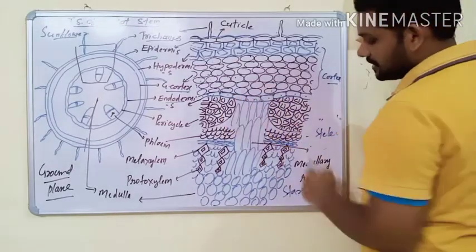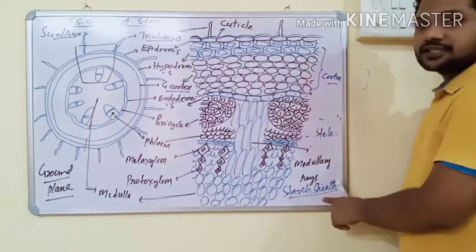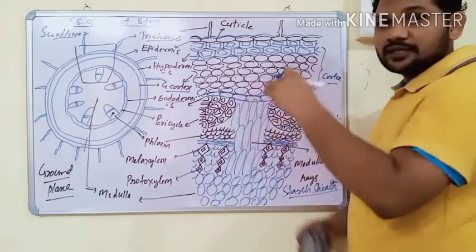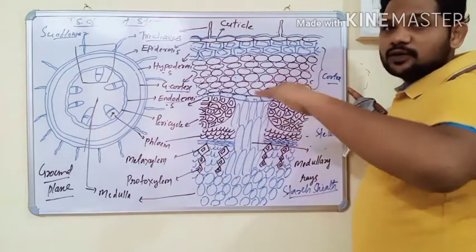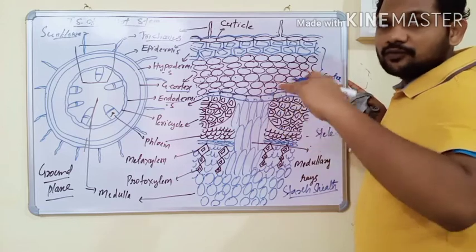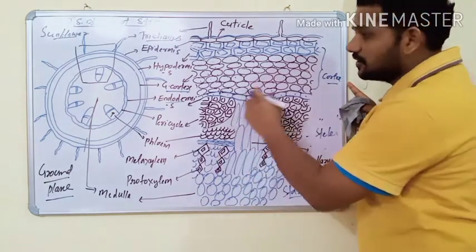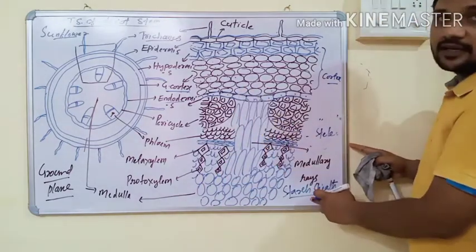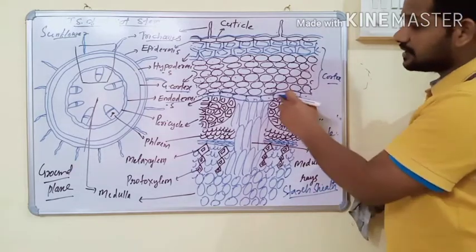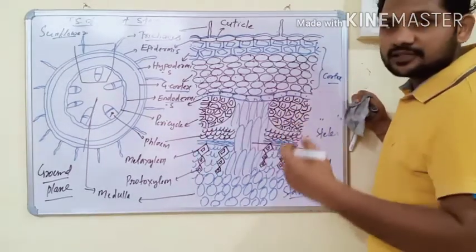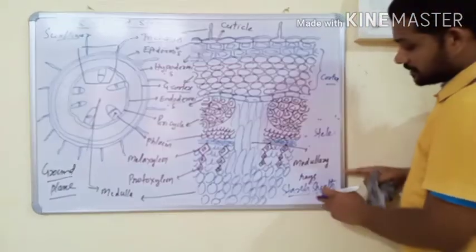The endodermis is rich in starch grains. Due to the presence of starch grains, the endodermis in dicot stem is also known as starch sheet. In dicot and monocot roots, endodermal cells contain suberin bands and casparian strips, which make the endodermis impermeable for water and minerals. Whereas in dicot stem, casparian strips are absent on endodermis; instead, endodermal cells contain a large number of starch grains, acting as starch sheet.